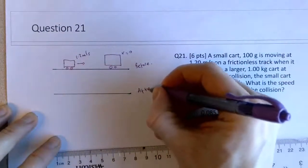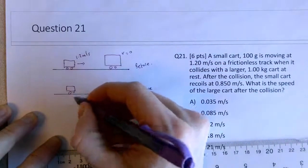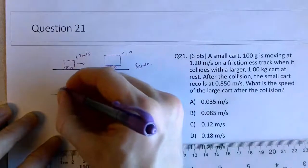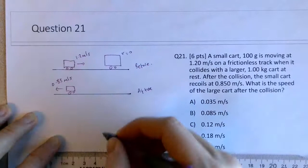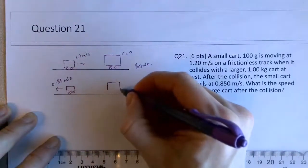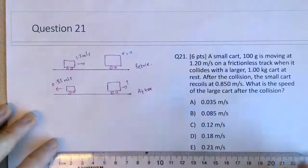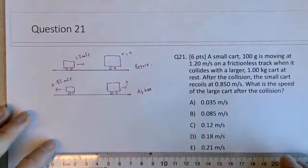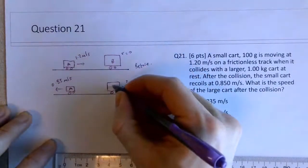And after, we've got the small car recoiling at 0.85 meters per second, and we want to know the final speed of the big car. So I'll go ahead and call the small car A and call the big car B.